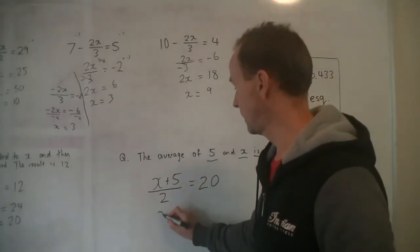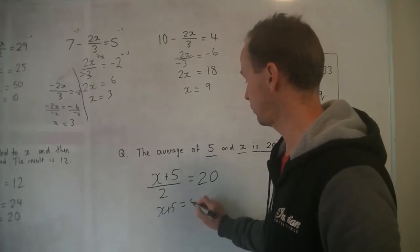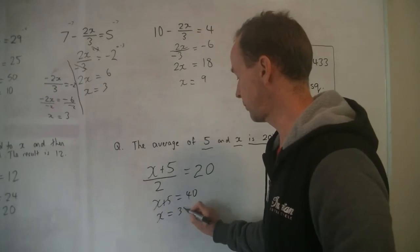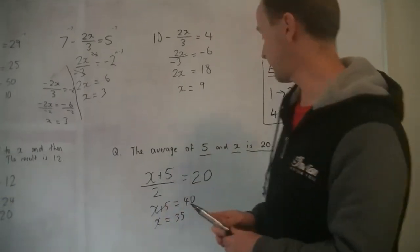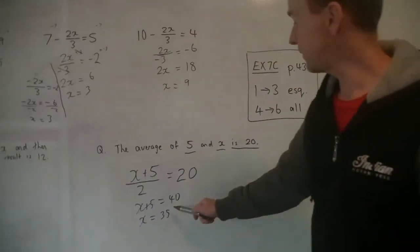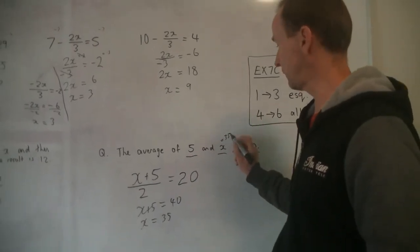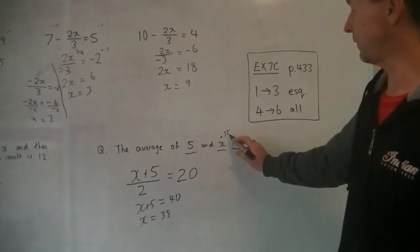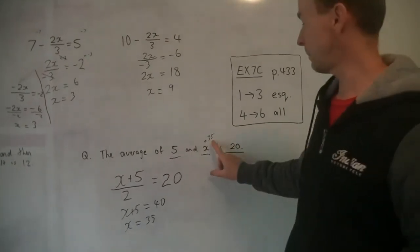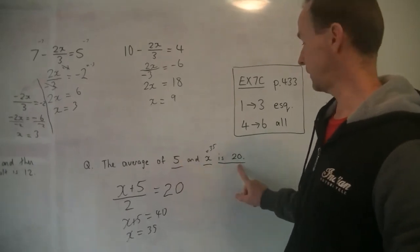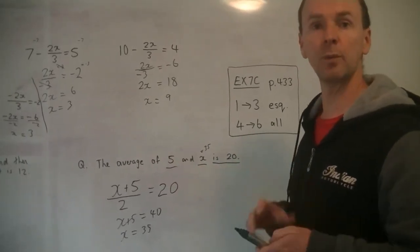Okay, so the average of those, x plus 5, and you divide it by 2 because that's an average. Add them together and divide it by how many there are and it's equal to 20. So now we times by 2. We get x plus 5 equals 40. Take away the 5 from both sides and you get x equals 35. Now I want to check to make sure it's a sensible answer. We're saying the other number is 35. So this x is 35. Is the average of 5 and 35, is it 20? Let's add them up. 35 plus 5 is 40. 40 divided by 2 is 20. Good job. So we know we've got a sensible answer.